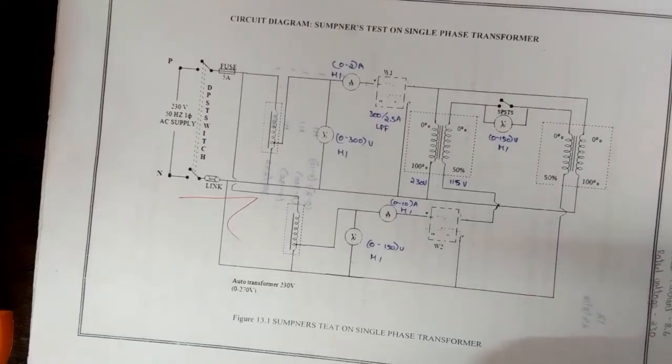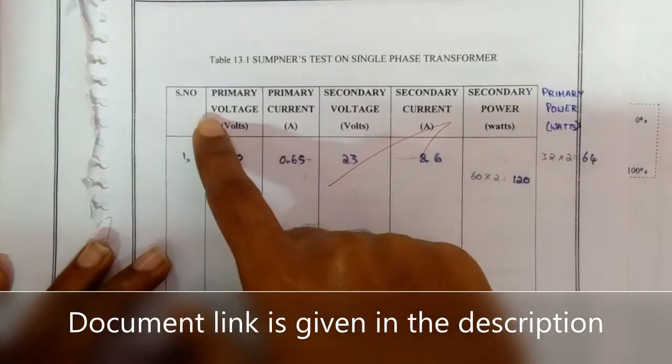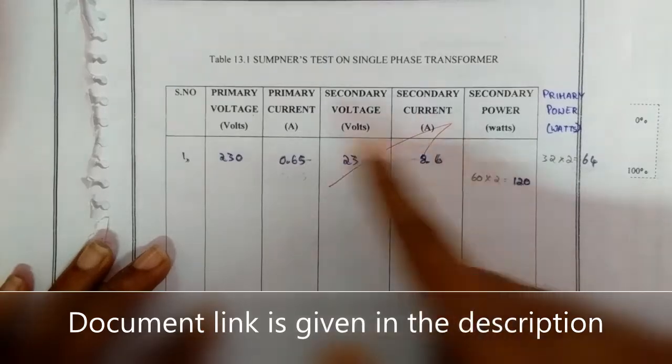All meter readings of secondary side are noted down for primary meter readings and the secondary meter SC readings. The percentage efficiency and percentage regulation of given two identical single phase transformers are predetermined and they are tabulated.